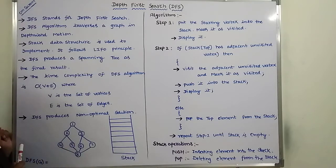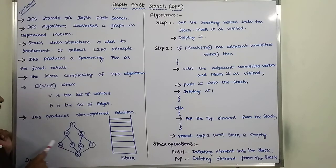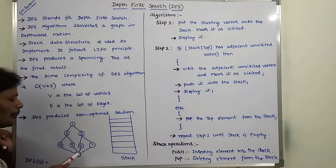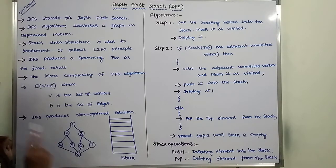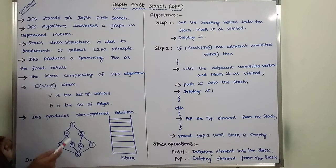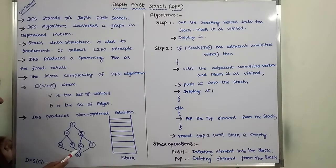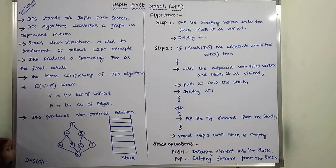What are the adjacent vertices for vertex 5? Vertex 2 or vertex 8. Vertex 2 is already visited. Vertex 8 is already visited. So again we have to backtrack to vertex 8. What are the adjacent vertices for vertex 8? 4, 5, 6, 7. Vertices 4 and 5 are visited. So we have to select either the 6th or 7th vertex. I am selecting vertex 6.